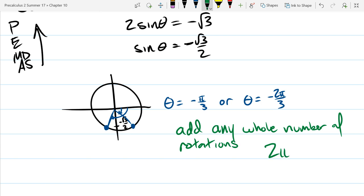So, a full rotation is 2 pi, so we're going to write it as 2 pi k for any k in the integers.